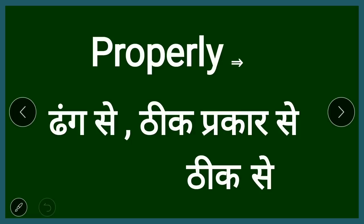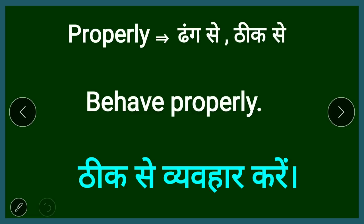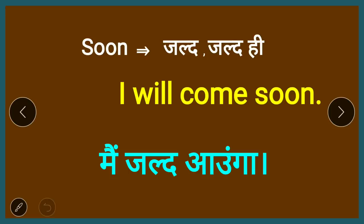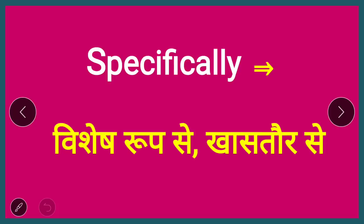For 'properly' — meaning in the right manner, ढंग से or ठीक से — you will use the word 'properly.' For example: 'Behave properly.' The next word is 'soon,' meaning jald hi. For example: 'I will come soon' or 'I'll go soon.'